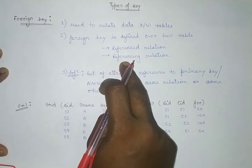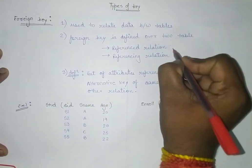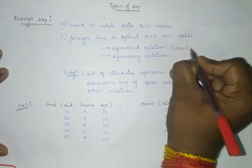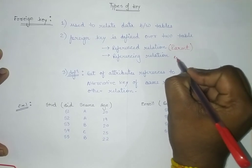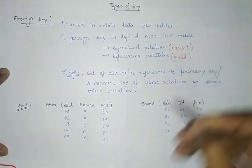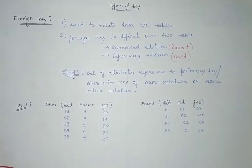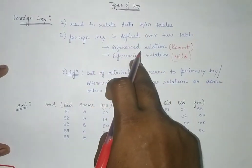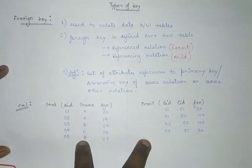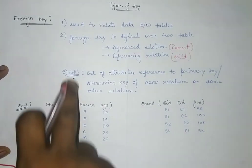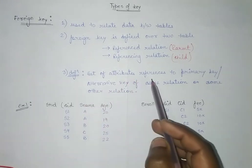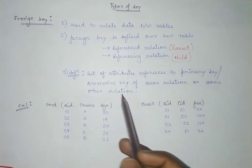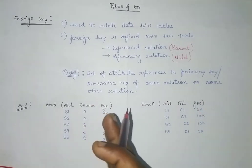The foreign key is defined over two tables: one is referenced and the other is referencing. The referenced one is also known as the parent table, and the referencing is also known as the child table. Now let's look at the exact definition of foreign key: it is a set of attributes that references the primary key or alternative key of the same or some other relation.